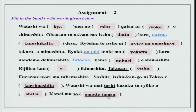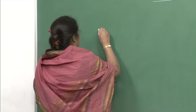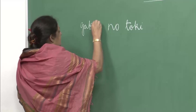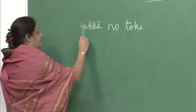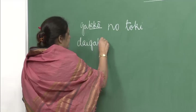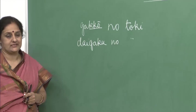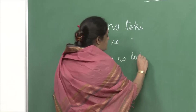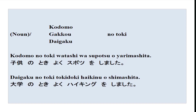There are a few things we need to do quickly on the board. The first is 'noun no toki,' meaning 'at that time.' For example, gakkou no toki — when I was in school. Daigaku no toki — when I was in university. Kodomo no toki — when I was a child. You can use toki like this very, very freely.